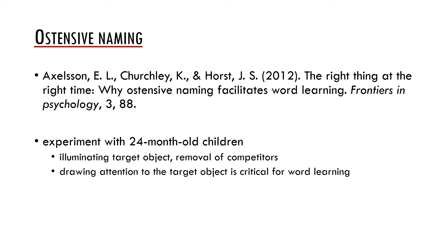Returning to ostensive naming, in a study by Emma Axelson, Kirsten Churchley, and Jessica Horst, it was tested how ostensive naming actually works in word learning. They ran an experiment with 24-month-olds and found that illumination of the target object and covering of other objects in the scene actually improved word learning compared to a situation in which children were given a social pragmatic cue such as pointing. They conclude that what is most important in ostensive naming is drawing attention to the target object.